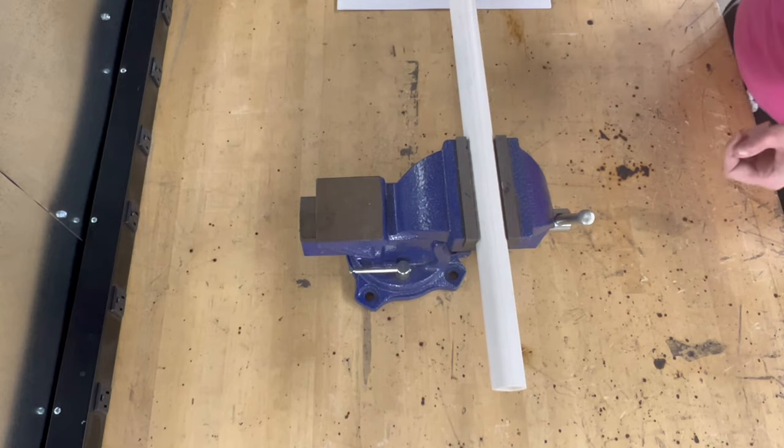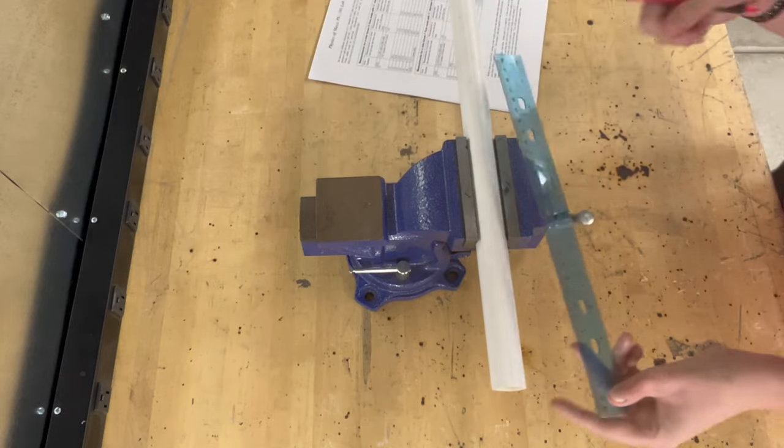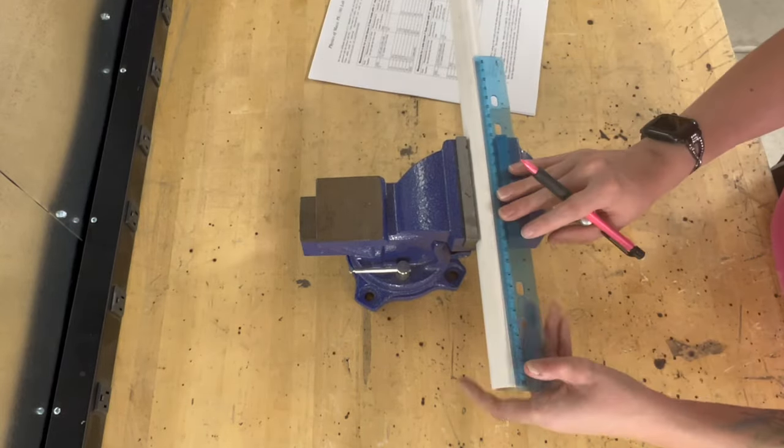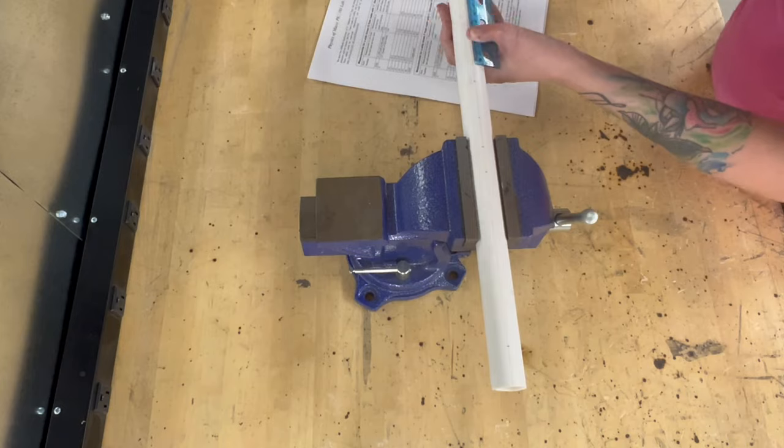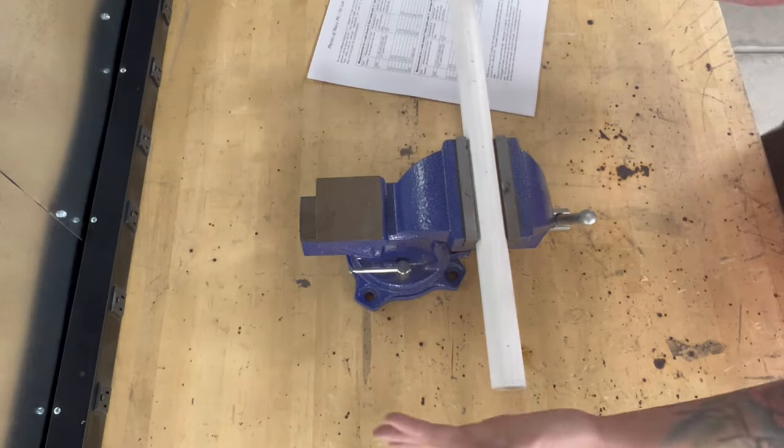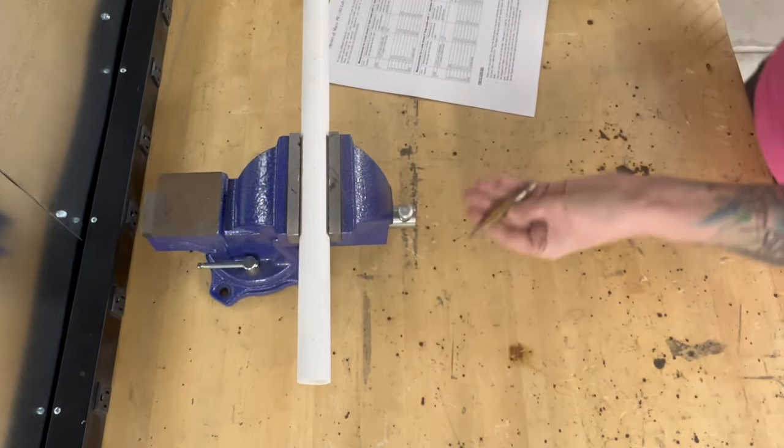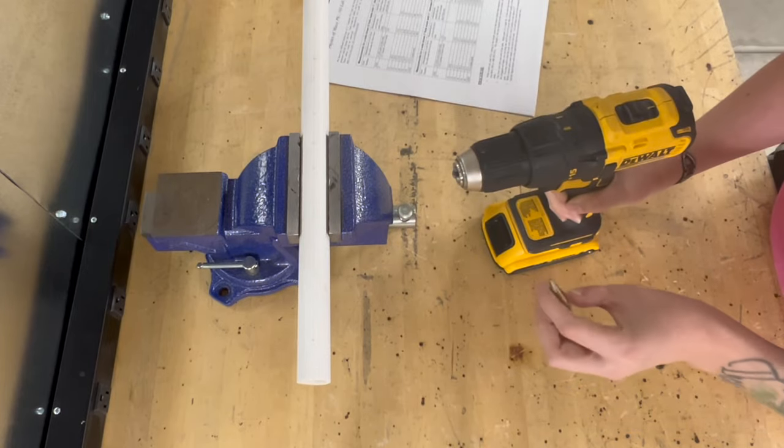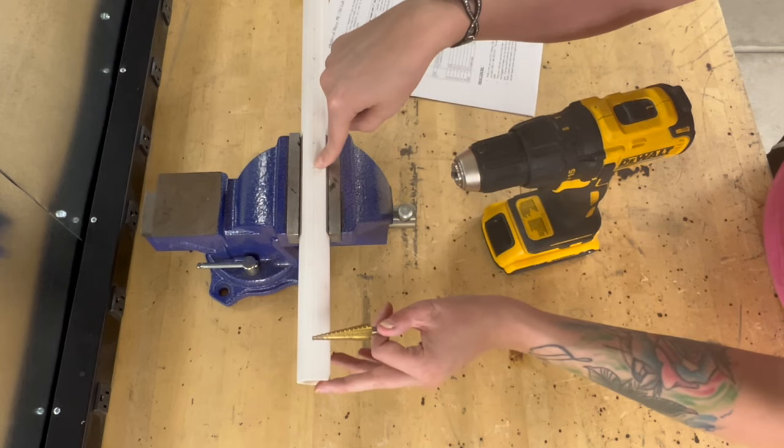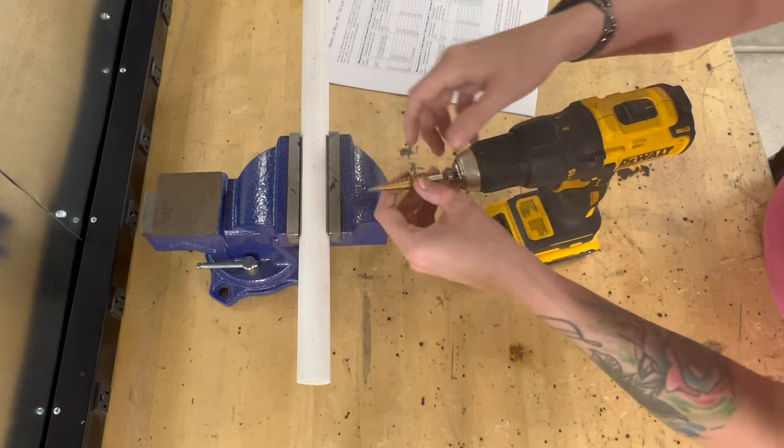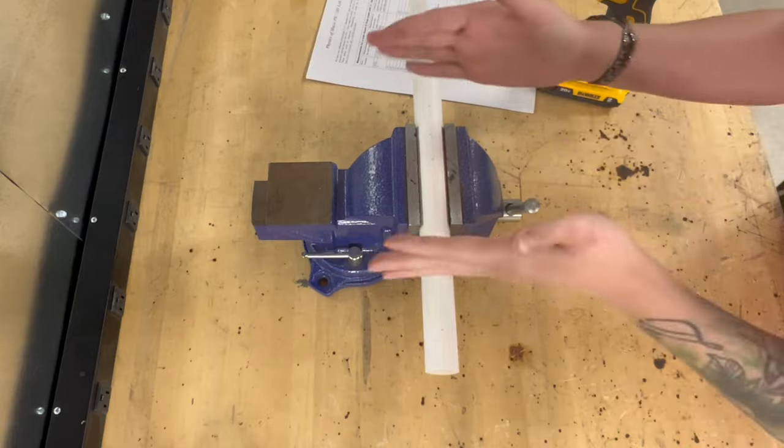Now we're going to go in with our other ruler because this one has centimeters on it, and we're going to start marking out where the holes need to be. Now that we have everything all marked up, we can go ahead and put our drill bit into our drill. This one does go to an eighth, which is what I was using on my other one. I just did a one-eighth pilot hole and then just started drilling through.